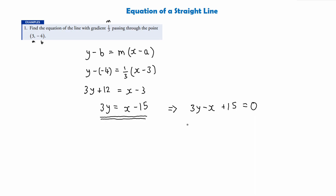We can also rearrange to 3y subtract x plus 15 equals 0. This is called the general form of the equation of a straight line, although the previous form is equally valid.